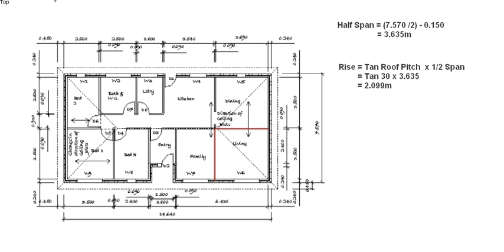Next we want to work out the rise of the roof. The formula for rise is: tan of the roof pitch, which is 30 degrees in this example, times our half span. So tan(30°) × 3.635 gives us 2.099m.